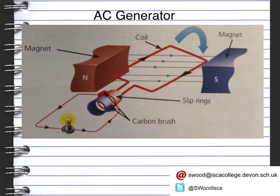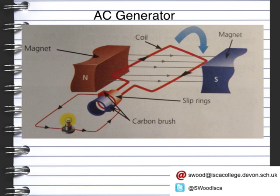The brushes make contact with the slip rings, enabling the current to continually flow. As the coil goes around, the current changes every half cycle — one half cycle and then the next. The connection between the slip rings and the brush is essential for maintaining that alternating current between the two.